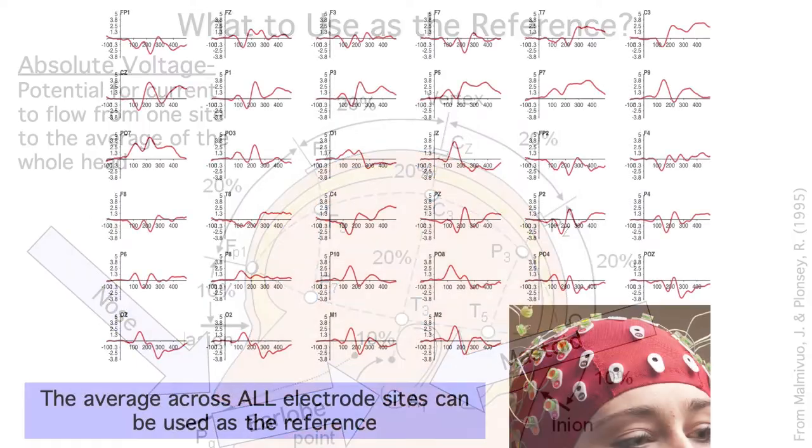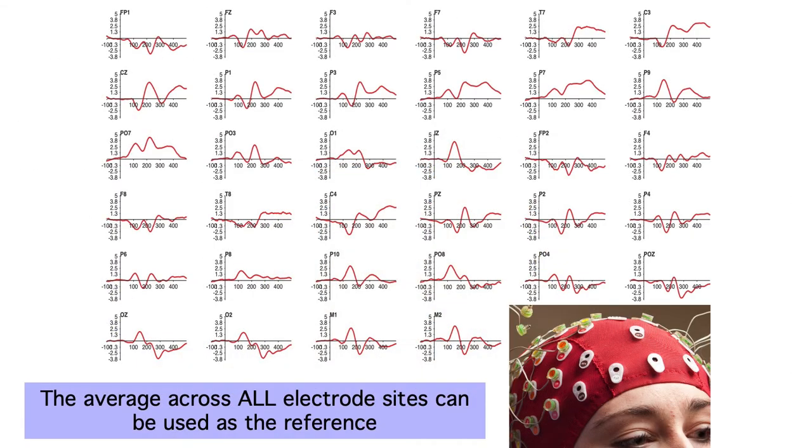Another common option is to use the average of all the electrodes as the reference. The idea is that this will get us close to the absolute voltage. However, the average across all our electrodes is not the same as the average over the whole head. How would you get electrodes on the bottom of the head, where the neck is? The average of all sites can be a fine reference, but it's not a magic bullet.